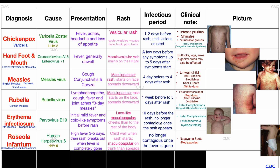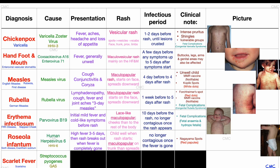Last but not least, we are going to talk about scarlet fever, which is also known as scarlatina. Unlike all the other six infectious diseases, this one is different in the sense that it is actually caused by a bacterium called Streptococcus pyogenes, which is a group A streptococcus. As it is not a virus but rather a bacterial infection, there is antibiotic treatment for it, usually with phenoxymethyl penicillin if the patient is not penicillin allergic.